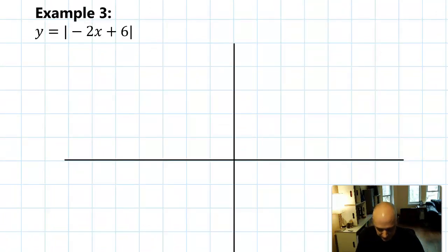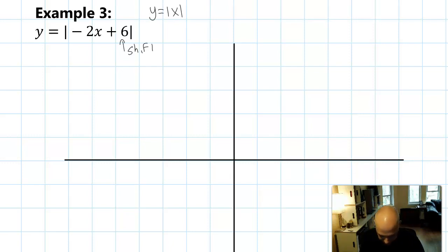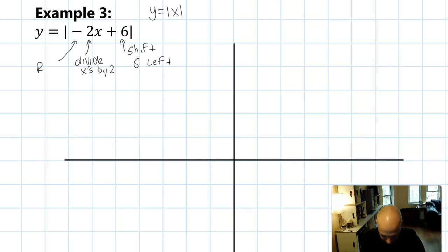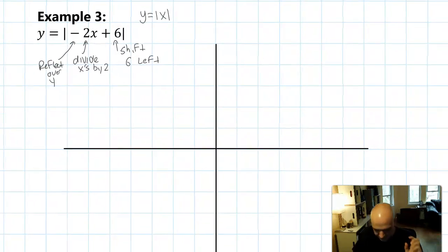Here's our third example. The parent is absolute value of X, and we have three transformations going on. We're going to talk shift, stretch, and then reflect. We're going to be shifting six units to the left, dividing all X's by two, and then reflecting over the Y axis — taking the opposite of all the X's. We're going to do them in that order.